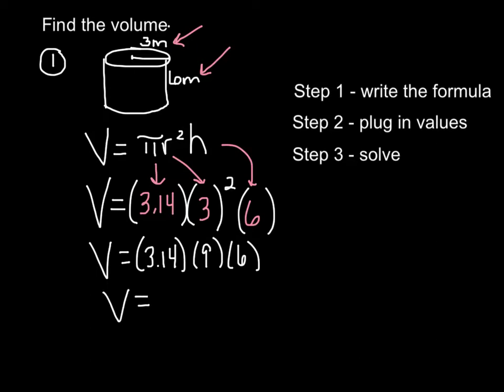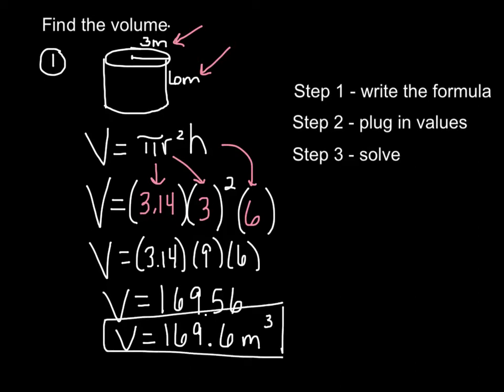And your answer is 169.56. We want to round our answer to the nearest tenth. So that would be 169.6. We're talking about volume. So it's going to be meters cubed or cubic meters. Pretty easy. You have a formula. You plug everything in. And then you just solve it. 169.6 cubic meters.